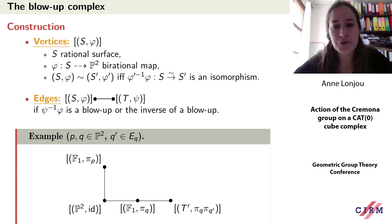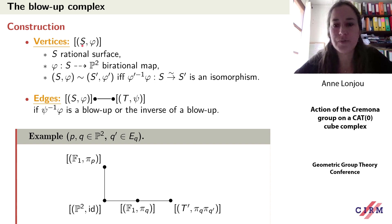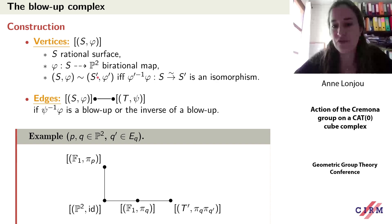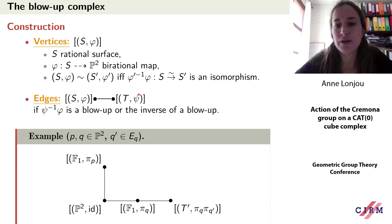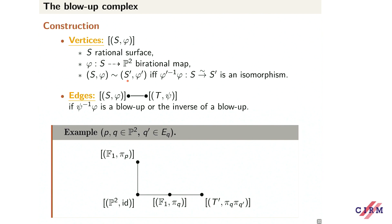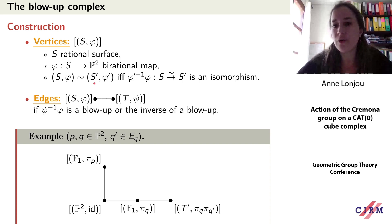Now we construct our CAT(0) cube complex. The vertices will be equivalence classes of marked surfaces, where S is a rational surface — birational to P2 — and phi is a birational map from S to P2. The equivalence relation is that two marked surfaces (S, phi) and (S', phi') are equivalent if phi' inverse composed with phi is an isomorphism from S to S'. So everything is considered up to isomorphism of surfaces.